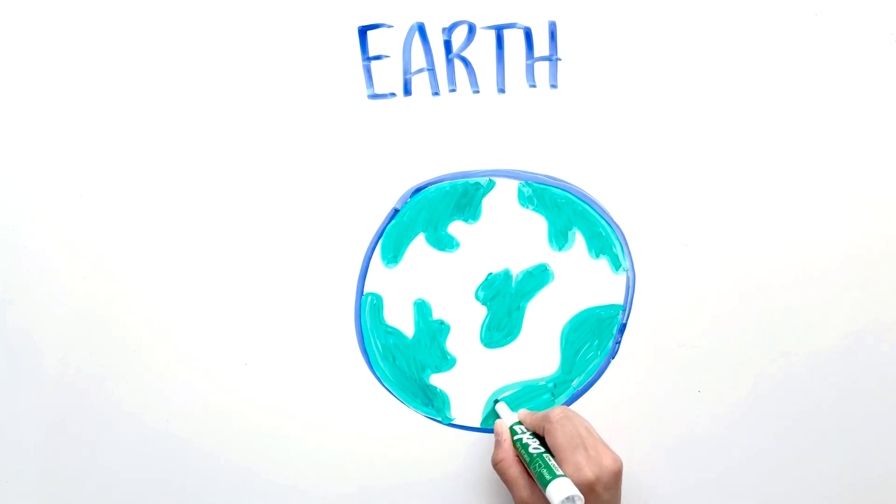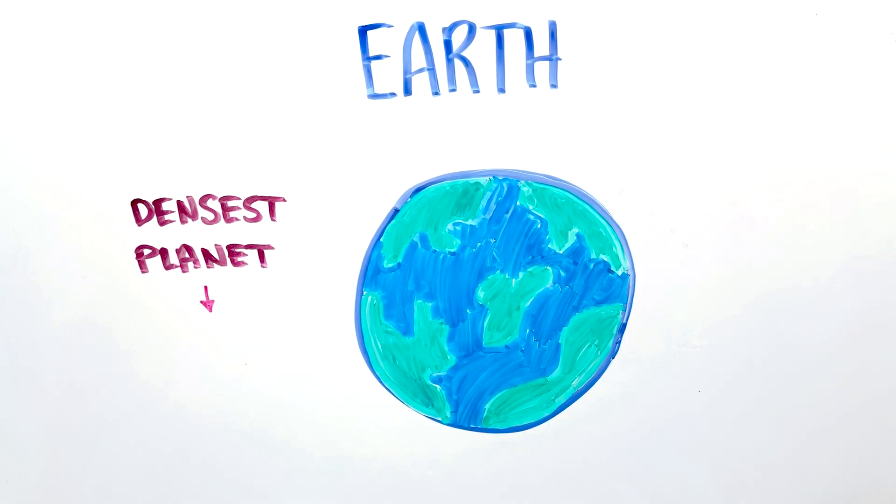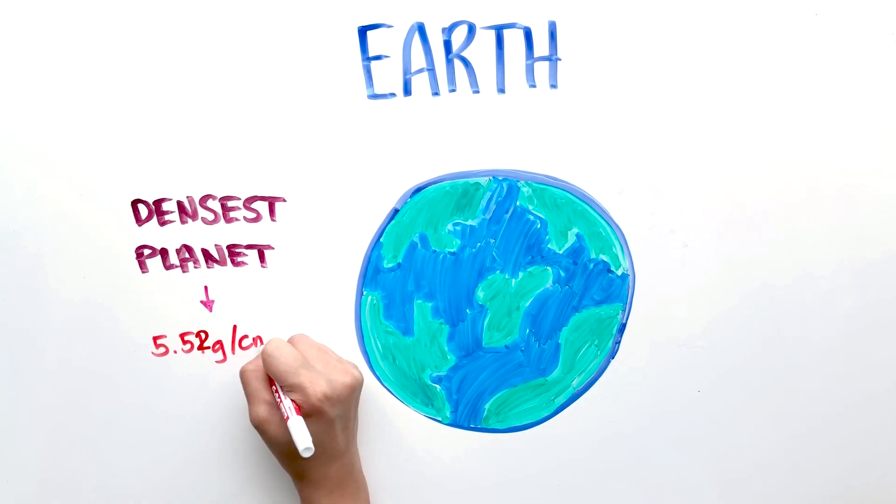The Earth is the densest planet in our solar system with an average density of 5.52 grams per cubic centimeter.